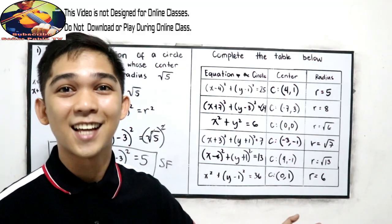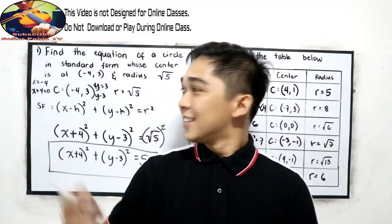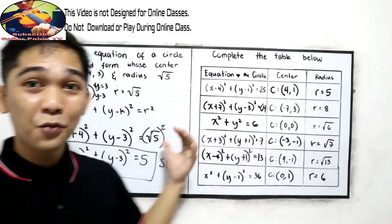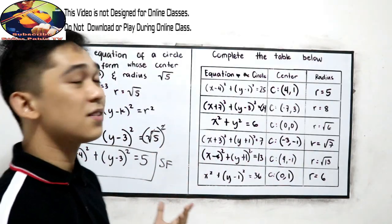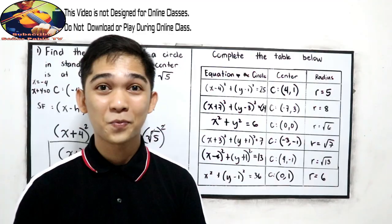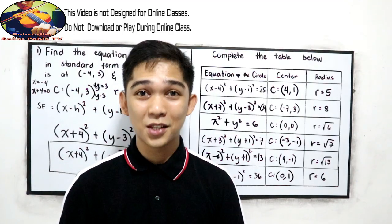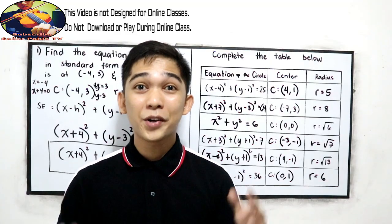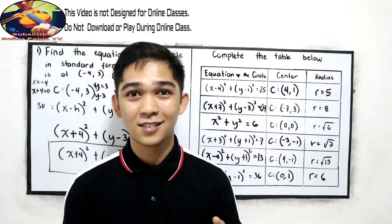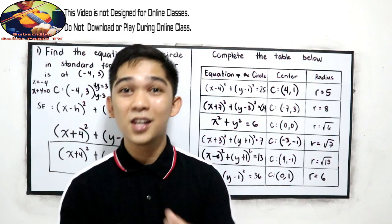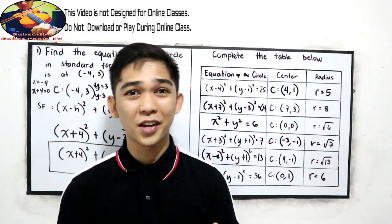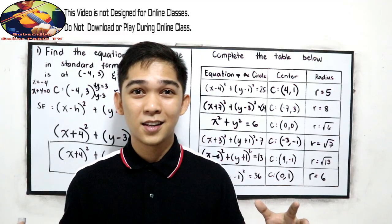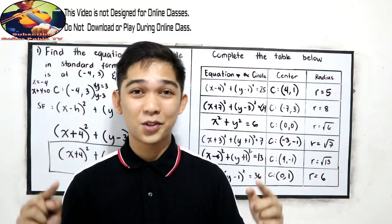And we're done. That's how to find the equation of the circle in standard form given the radius and the center. Thank you for watching Senior Pablo TV. For our last video on the circle, we're now going to graph the circle given the center, the radius, or the standard form. Kindly share this video to your classroom.